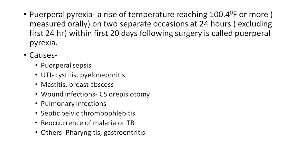Puerperal pyrexia is a rise of temperature reaching 100.4 degrees Fahrenheit or more, measured orally on two separate occasions 24 hours apart, excluding the first 24 hours, within the first 20 days following delivery.